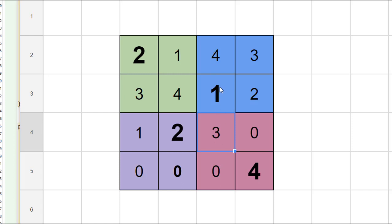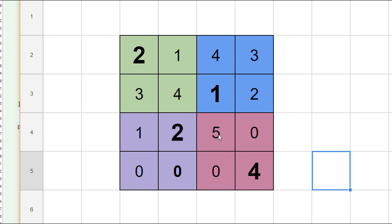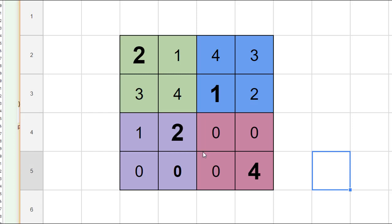But look what happens when I try to increment this from a three to a four — notice that a four is illegal here. So then we end up with a five. Once again, five is too large for a four by four Sudoku board. So following our rules for backtracking, we're going to replace this with a zero.